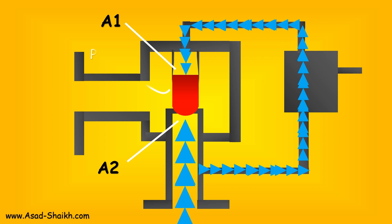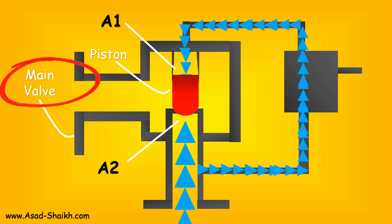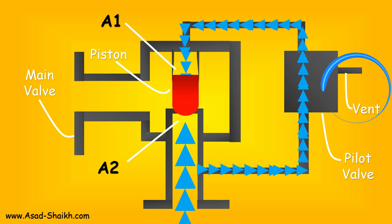The area A1 and A2 and the pressure here control the piston, and as soon as the piston lifts up, the main valve will actually relieve the pressure. This is your main valve, this is your pilot valve, and this is the vent of the pilot valve.